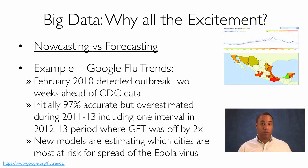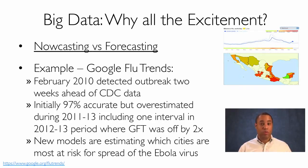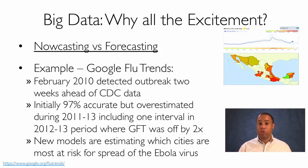They used this to build a model that was very accurate. In February of 2010, it was able to detect an outbreak two weeks ahead of CDC data. Initially the model was about 97% accurate, but during a period from 2011 to 2013, it overestimated the prevalence of flu — including being off by a factor of two in the 2012 to 2013 period. What happened is Google rolled out flu stories in Google News during this period, so people started reading about flu and searching on those stories, which skewed the results. Once they identified those factors and took them into account, the model was very accurate again.